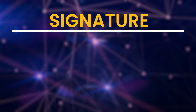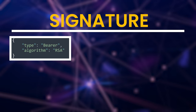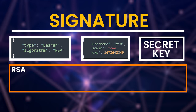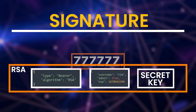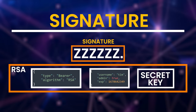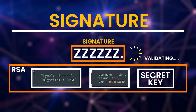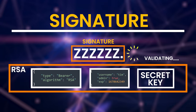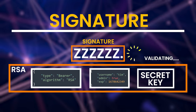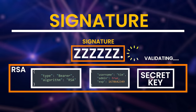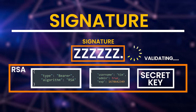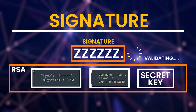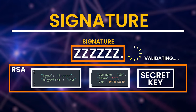To generate a signature, you take the base64 URL encoded header, the encoded payload, a secret key, and the algorithm specified in the header. Next, you use the algorithm to sign the token. The signature can then be verified by the receiving party to ensure that the message wasn't changed. The verification process involves determining if the signature is valid for the given message and header, meaning users can determine if the message has been tampered with without having access to the secret or signing key. This is similar to what happens when transactions are verified on blockchain networks using only the sender's public key.